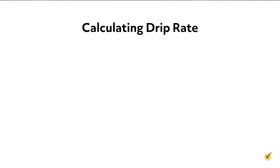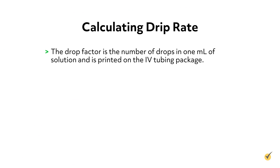When calculating the drip rate, first identify which IV tubing you will be using — micro drip or macro drip — so you can use the proper drop factor in your calculations. The drop factor is the number of drops in one milliliter of solution and is printed on the IV tubing package.